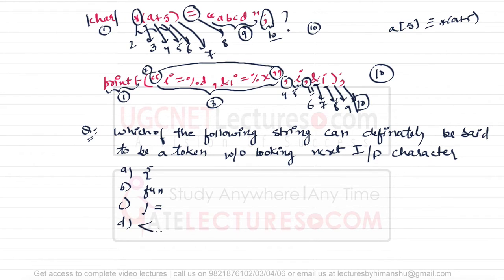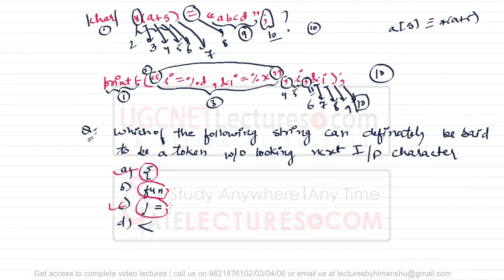The opening bracket, without looking at the next statement, can clearly be said to be a token. Option 'fun' is a name of an identifier and may have another character associated with it — we need to understand whether it is a function or a variable name. We cannot say without looking at the next symbol what it is. For option (c), the not-equal-to sign itself as a complete symbol can be said as a token, but a single less-than sign cannot, because it could be less-than-or-equal-to, making it one single token.